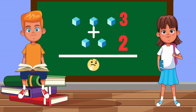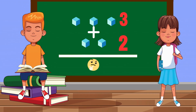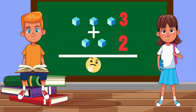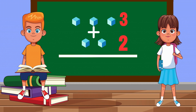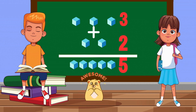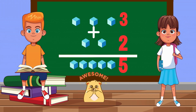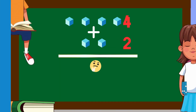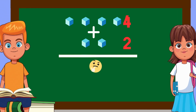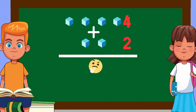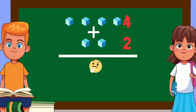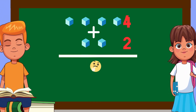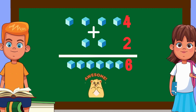Three cubes plus two cubes equals... Five cubes! Four cubes plus two cubes equals... Six cubes!